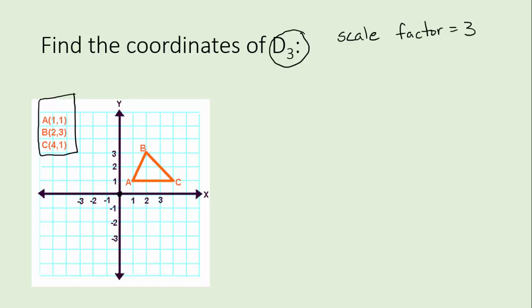What I mean is multiply everything by 3 and you'll get the new coordinates. So the coordinates of A' would be 1 times 3, 1 times 3. So that would be 3, 3. And the coordinates of B' would be 2 times 3, 3 times 3. And the coordinates of C' are 4 times 3, 1 times 3. And you're done. Those are the coordinates of the new figure.